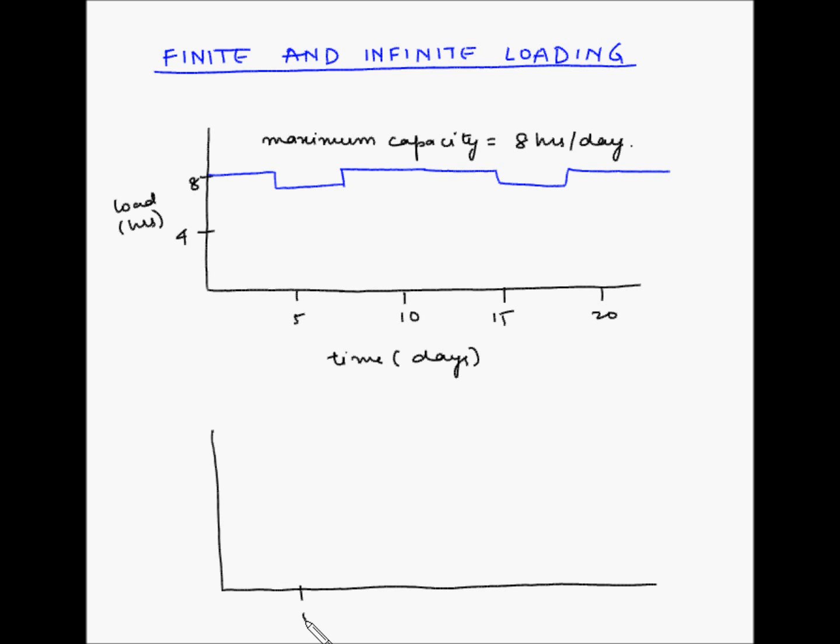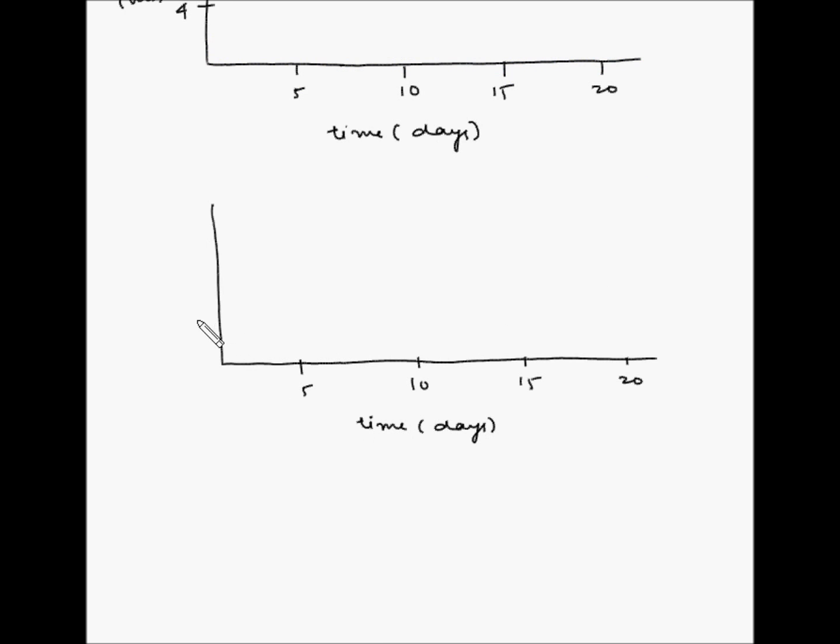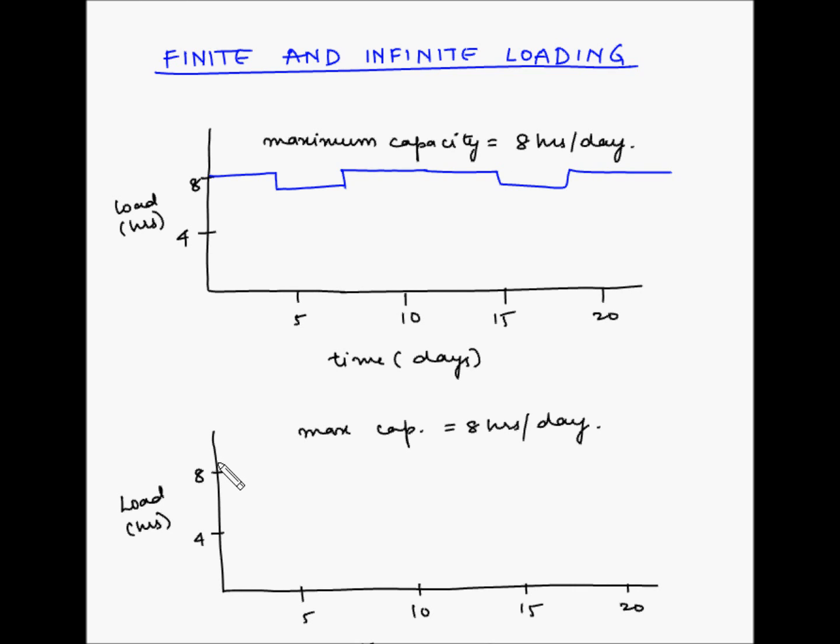On the x-axis we have time in days, and on the y-axis we have load. Again, the maximum capacity of the resource is eight hours per day. So the loading may appear something like this, which is more than the maximum capacity of eight hours per day. So the first Gantt chart is for finite loading.